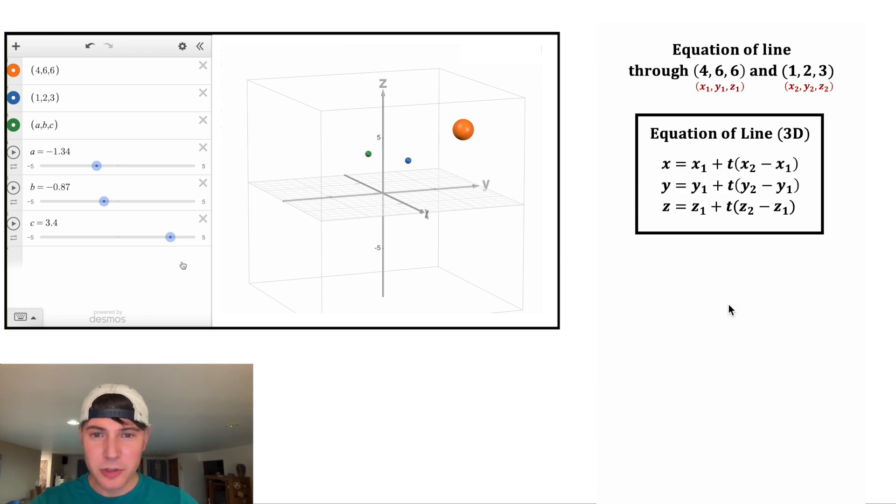So according to these notes, this would be the equation of the line through our orange point and our blue point. In the place of x sub 1, I plugged in 4. In the place of y sub 1, I plugged in 6. And z sub 1, we plugged in 6. And similar, x2, y2, z2 became 1, 2, 3. And x1, y1, z1 became 4, 6, 6. So apparently this is the parametric equation of the line. I want to explore this further, but let's look at it in Desmos first.